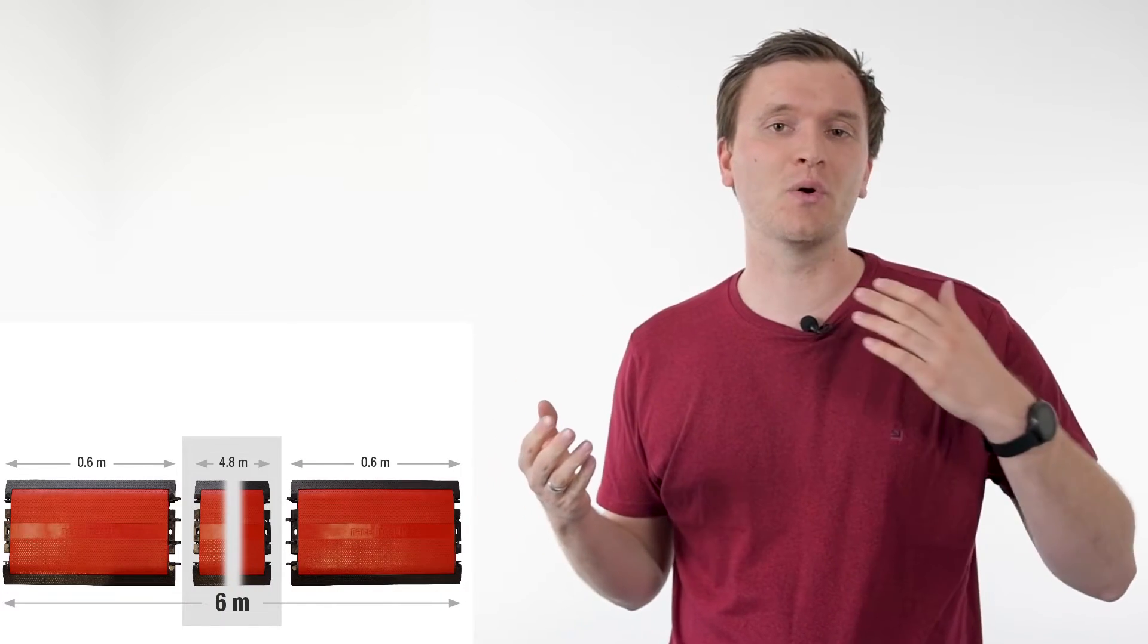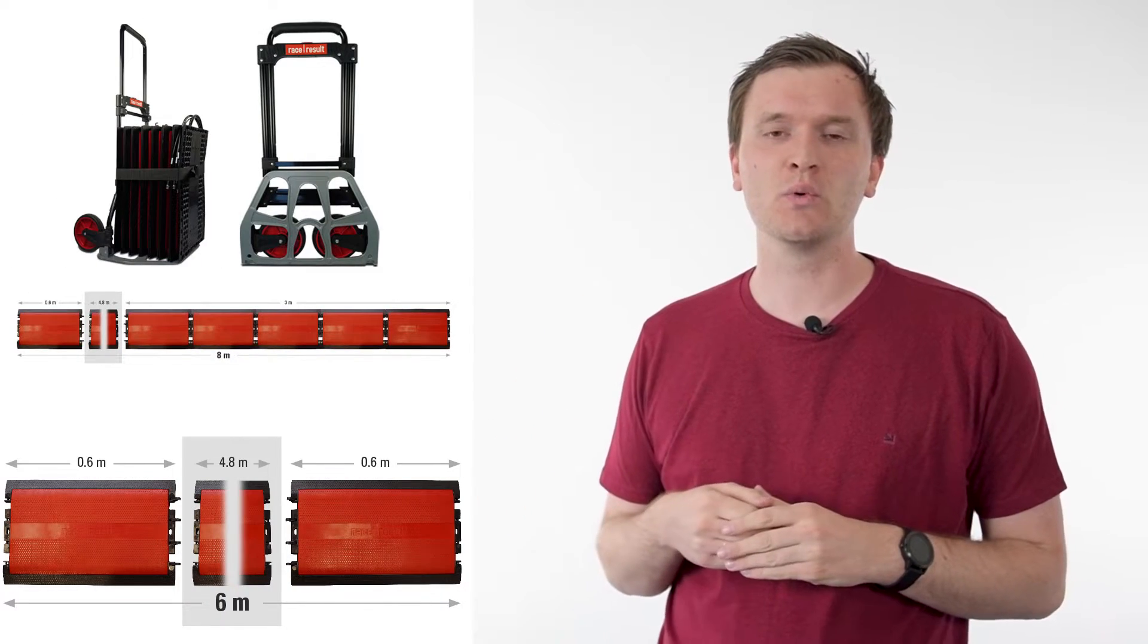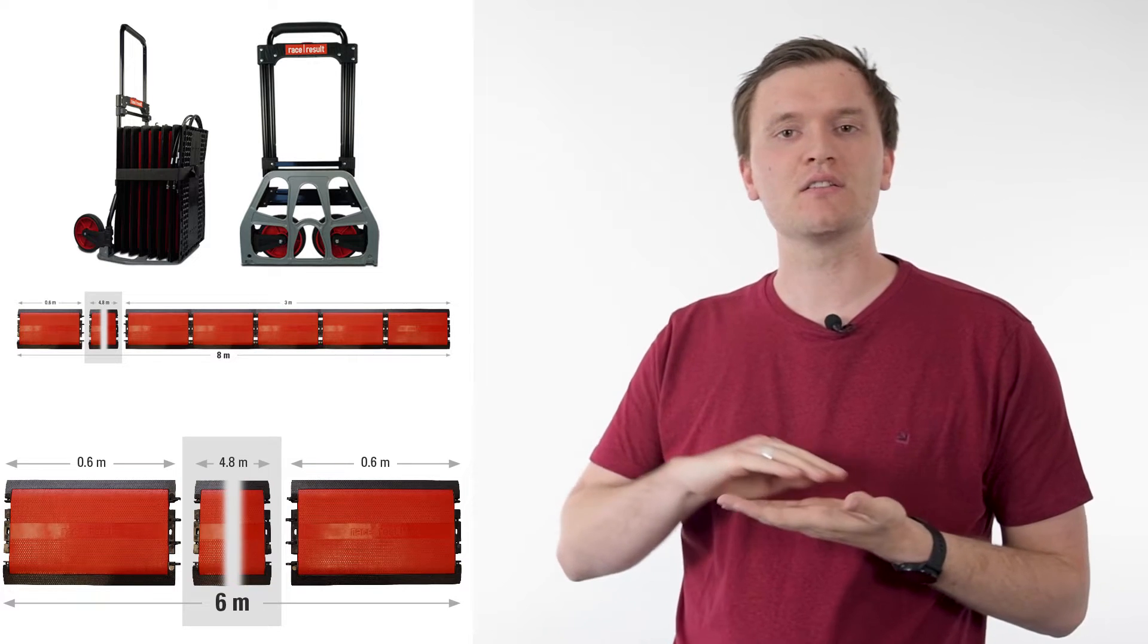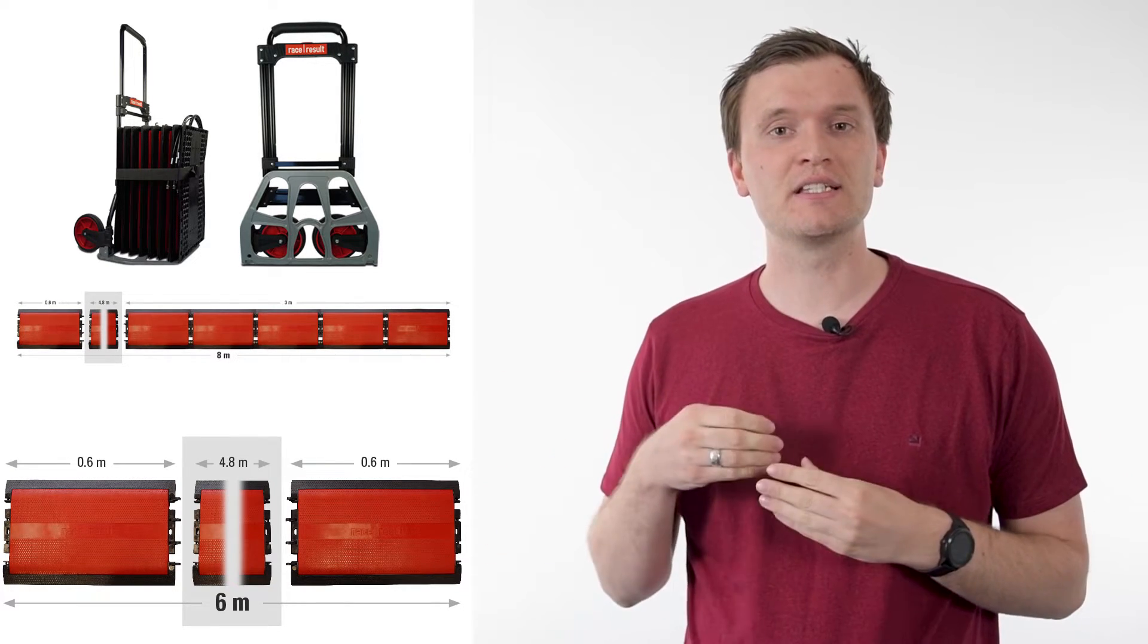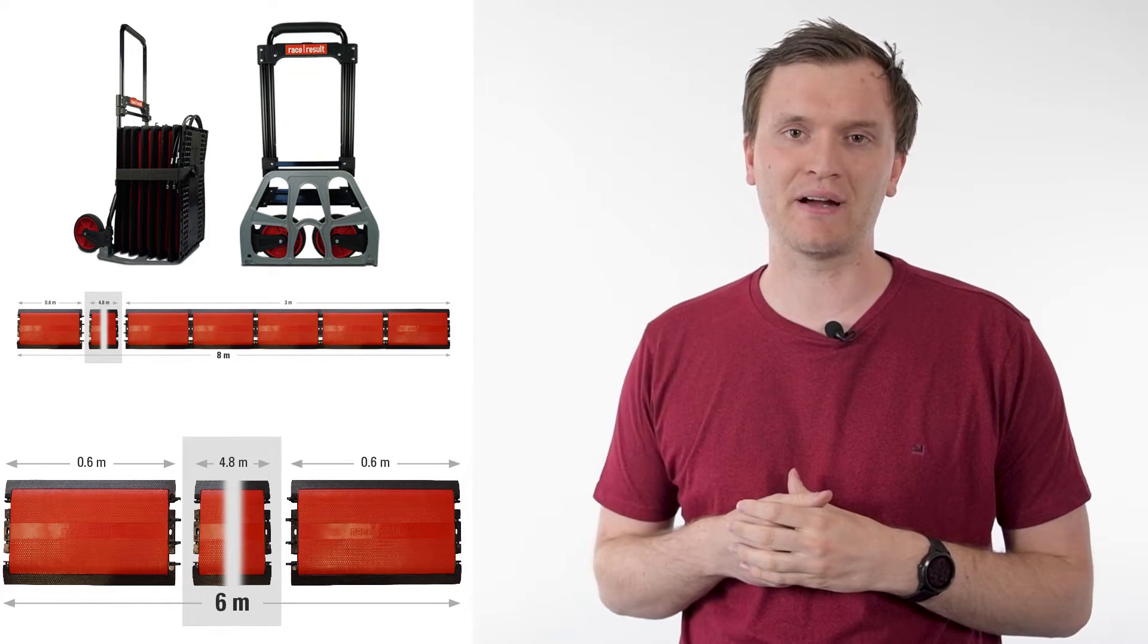For setups longer than 4.8 meters we offer either 6 meter or 8 meter extension kits which include empty mats, dummy antennas and longer cables for the 8 meter kit to distribute the antennas evenly across the length of the mat.